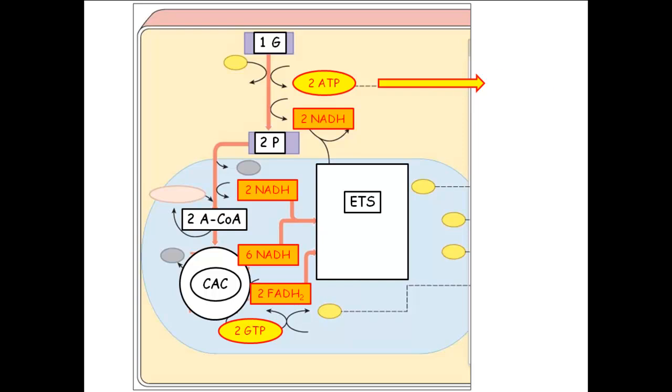One glucose to two pyruvate. How many ATPs do you get? Two. How many NADHs do you get? Two.